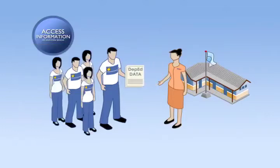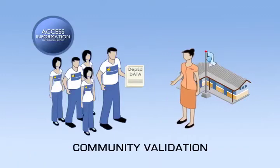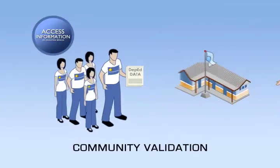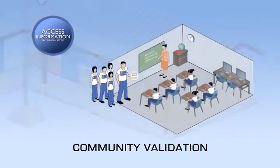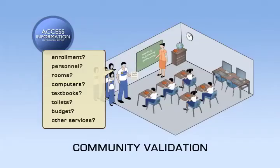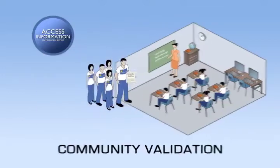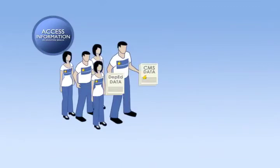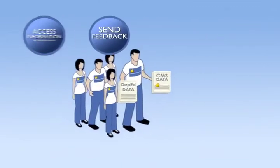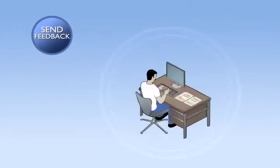When you already have that information, you have to validate them — we call it the community validation. So you go to the school itself and check manually those items. You count the number of students, the number of books, the number of classrooms, the number of computers — practically like counting votes during elections. After you have gathered the information from the schools, you have to go online and encode all the information collected during the validation.